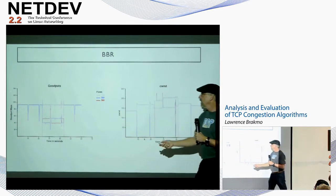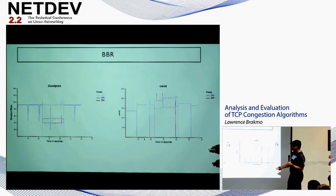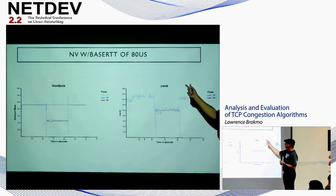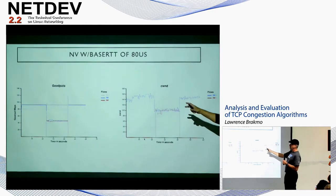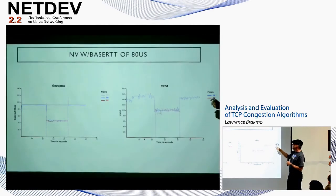BBR starts very nicely and very quickly goes to the right bandwidth. We see the periodic decrease of rate and congestion window as it probes for the RTT. When another flow starts it's more or less fair. The congestion windows are also much better controlled than with DCTCP or Cubic when there's only one flow. NV uses a base RTT of 80 microseconds — telling NV that any RTT more than 80 microseconds means congestion really helps it; it doesn't need to figure it out on its own. Other algorithms could use this feature too.